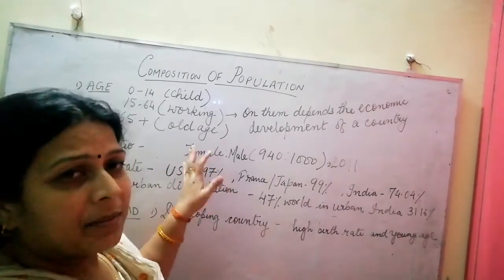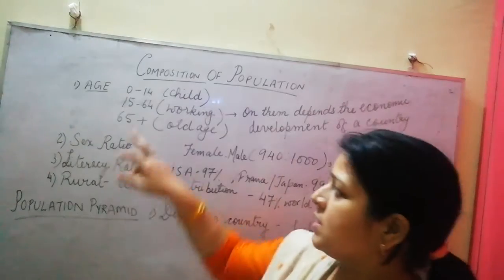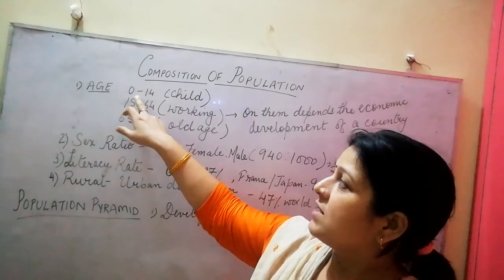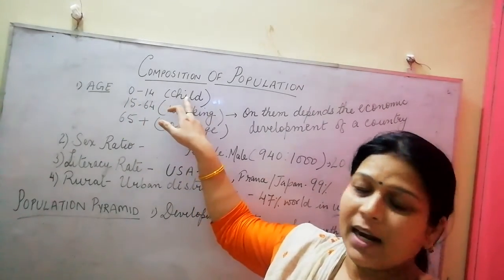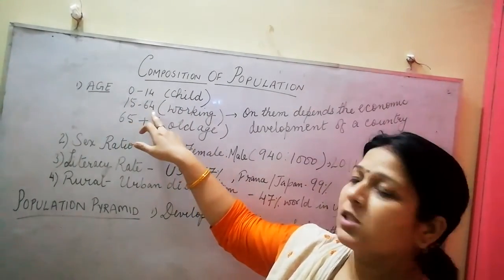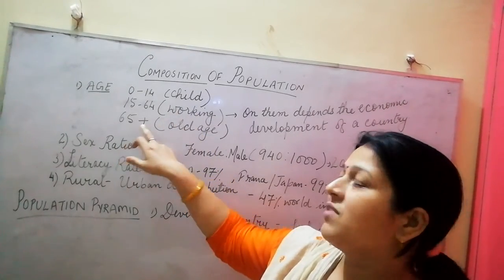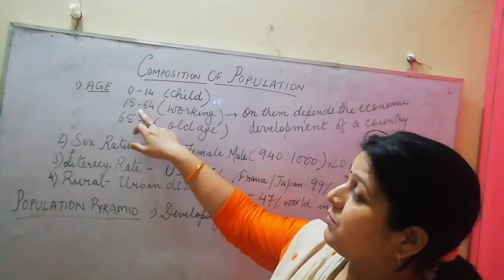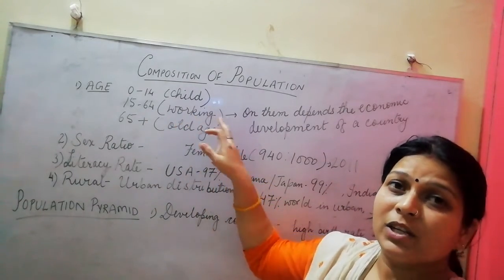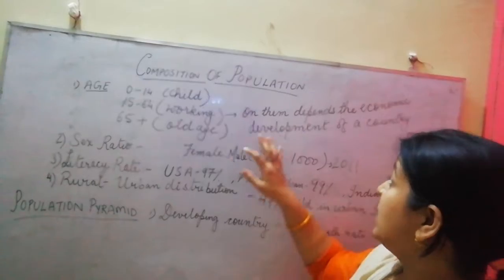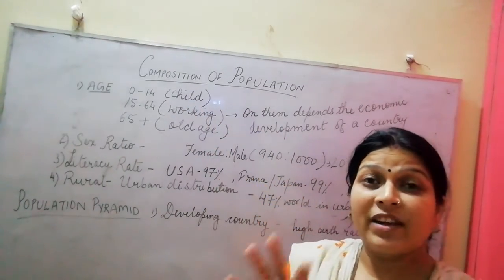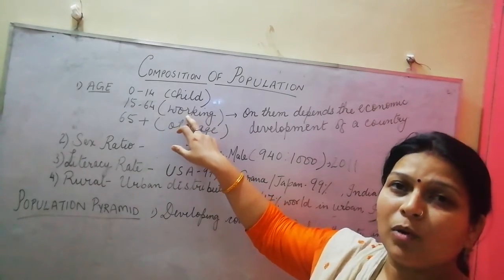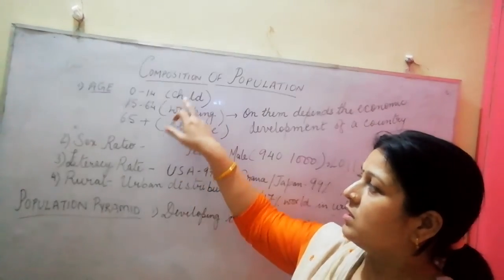Population composition can be divided on a number of bases. First is age. Age-wise, we have 0 to 14 years which is the child population, 15 to 64 which is the working population, and 65 plus which is the old age population. The economy and development of any country depends on this working population because they are the ones who look after the child and old age population as well.